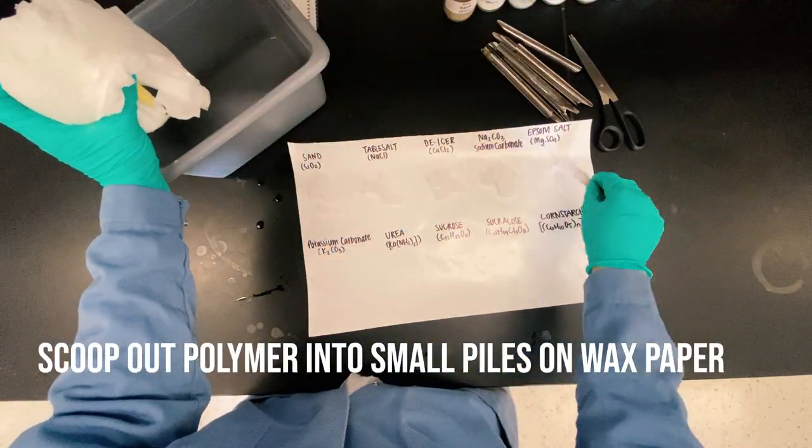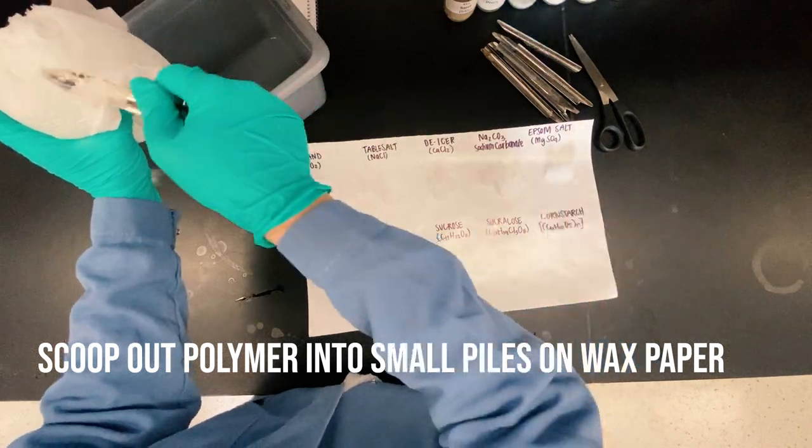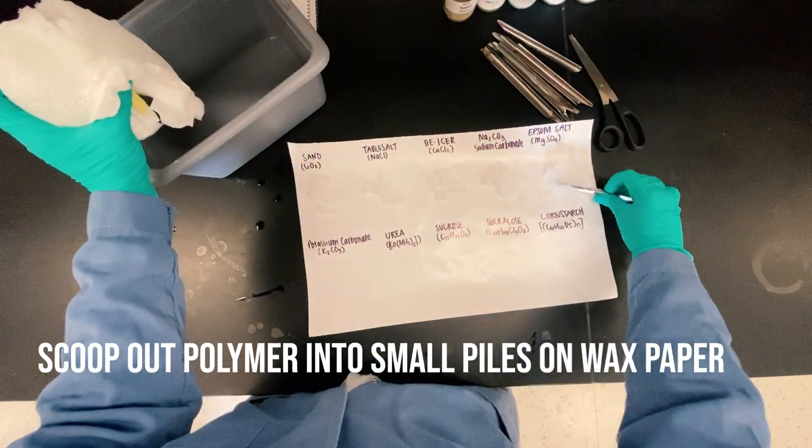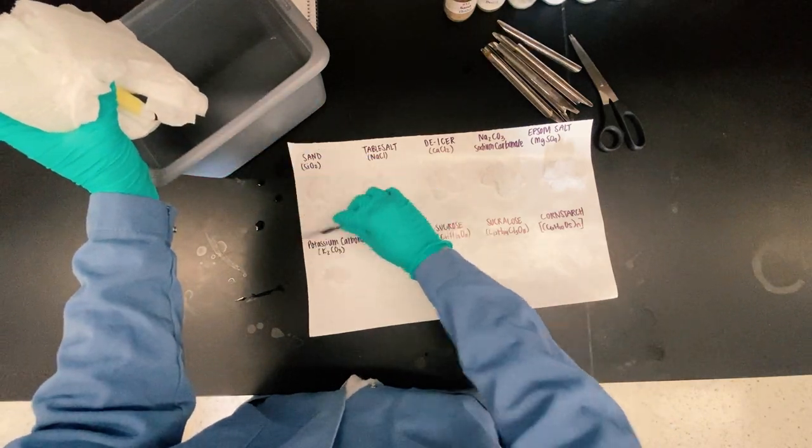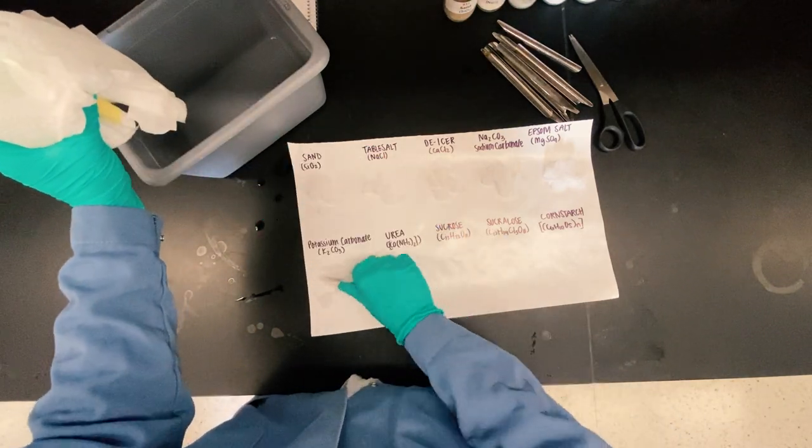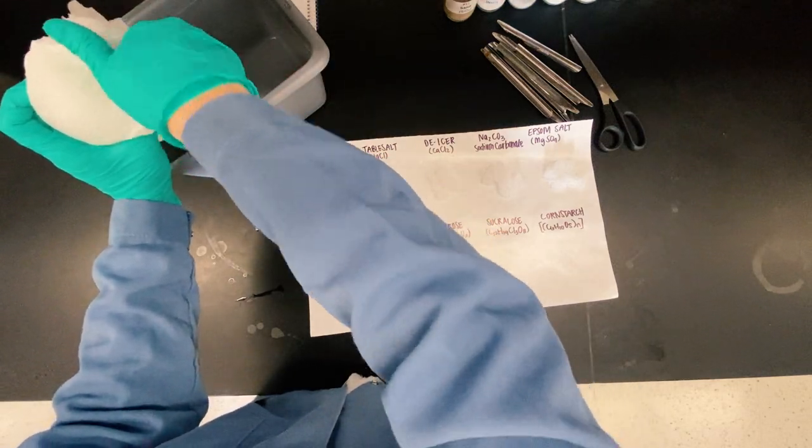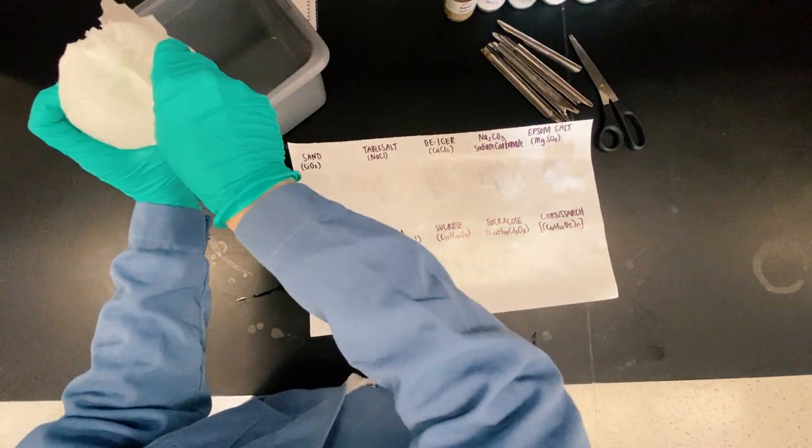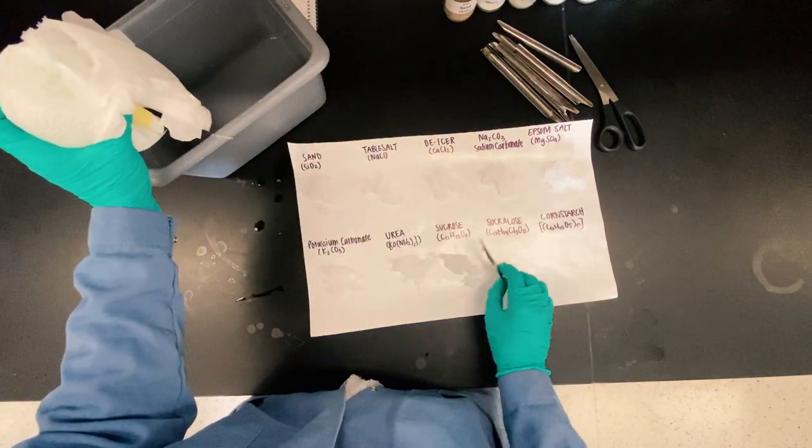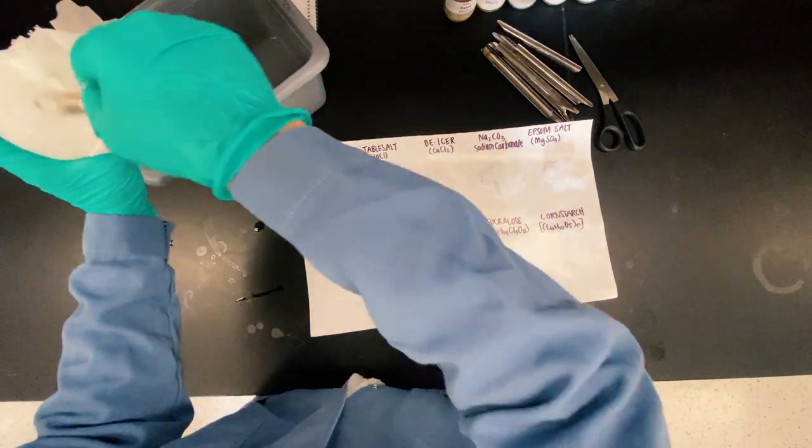So I'm going to scoop out the polymers into little piles onto the wax paper. In my opinion, this is a great lab to understand the effects of ionic and molecular compounds on polymers. It's all qualitative. You don't have to measure out anything, really, and you just see with your eyes the reaction happening.